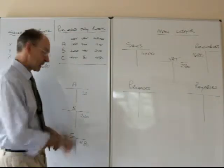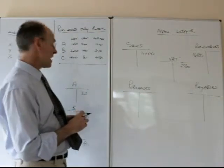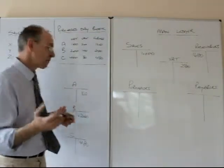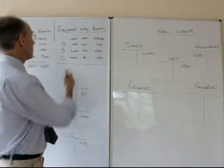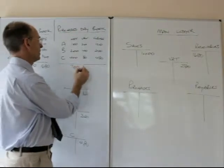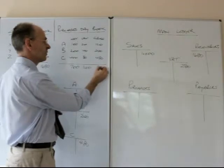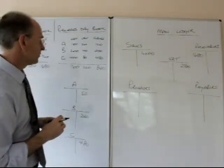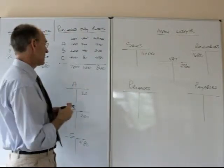These are for our records so we can keep a check on who we owe and what we owe them. And then at the end of the period, end of the day, whatever it is, we're going to update the main ledger. Similar sort of thing, we total up the purchase day book: £700, £140, £840. So total up the purchase day book, now enter into the main ledger.